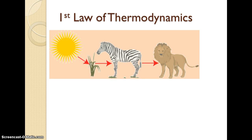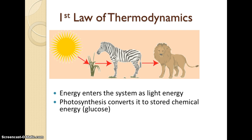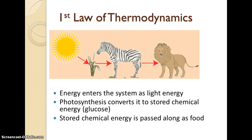If we look at the process of photosynthesis through the first law of thermodynamics, energy enters our system as light energy and is converted into glucose. When the zebra eats the plant, that glucose is consumed by the zebra. Then the lion eats the zebra, and so on — it's passed along as food. No new energy is created; we're taking that solar energy and just converting it into a form that other organisms can use.